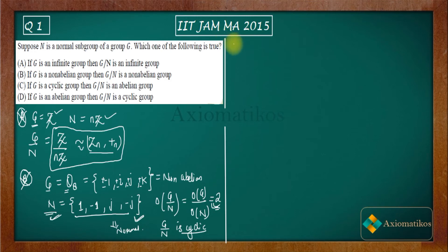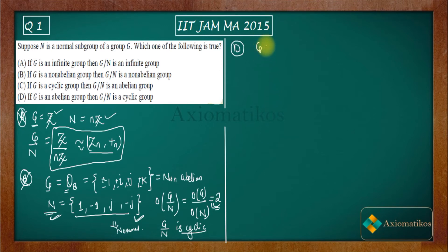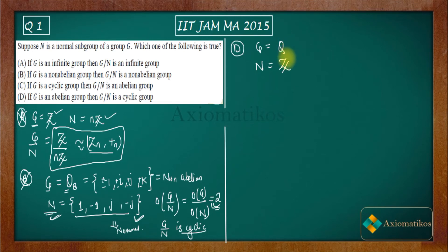Now I will go directly to option D, and then we will prove why option C is correct. Option D says that if G is an abelian group, then G by N is a cyclic group. For this I will use a very important and famous group in group theory. Let me consider G to be the set of rationals Q under addition — this forms a group under addition. I choose N to be Z (the integers). Since Q is abelian under addition and Z is a subgroup of Q, Z must be normal.